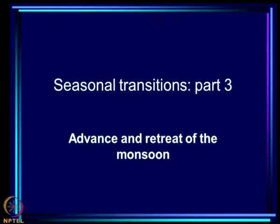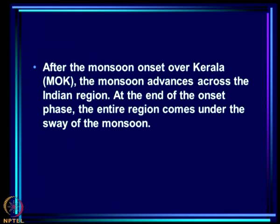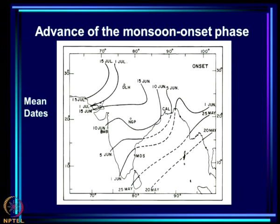We continue our discussion on seasonal transitions today. In the last class we already talked about the onset over Kerala. After the monsoon onset over Kerala, which is short MOK, the monsoon advances across the Indian region and at the end of the onset phase the entire region comes under the sway of the monsoon.